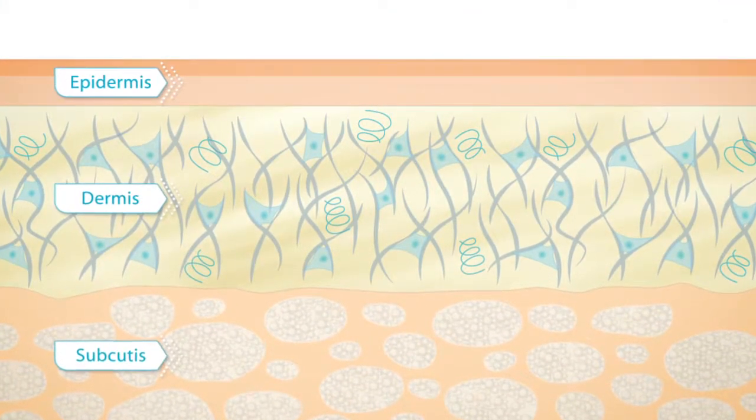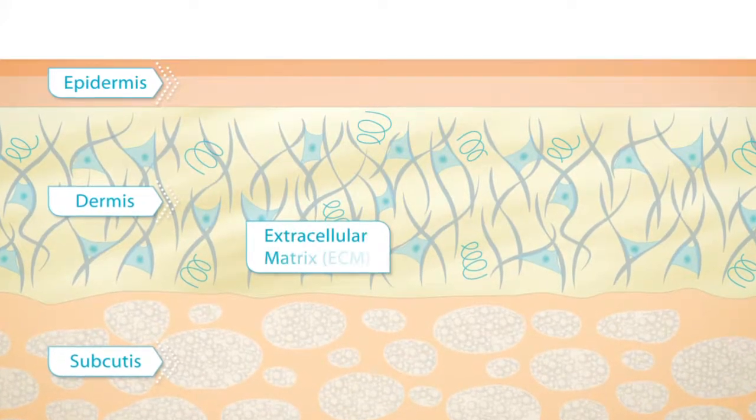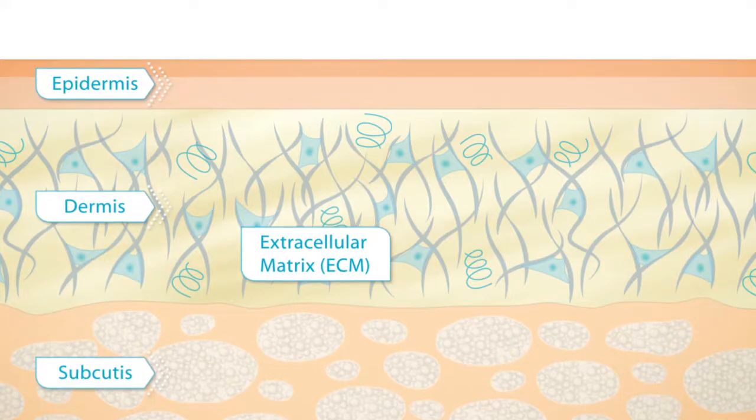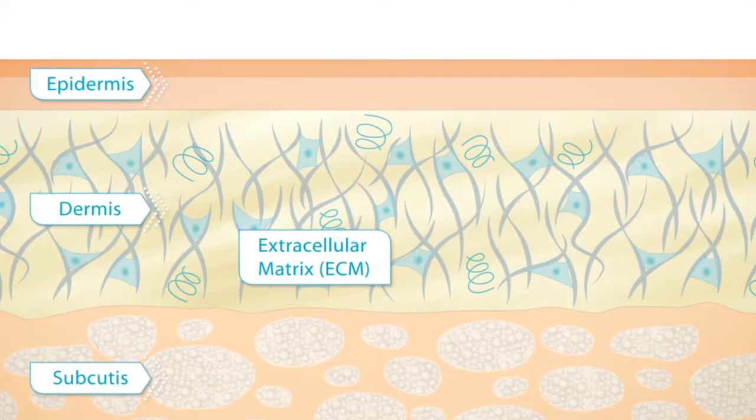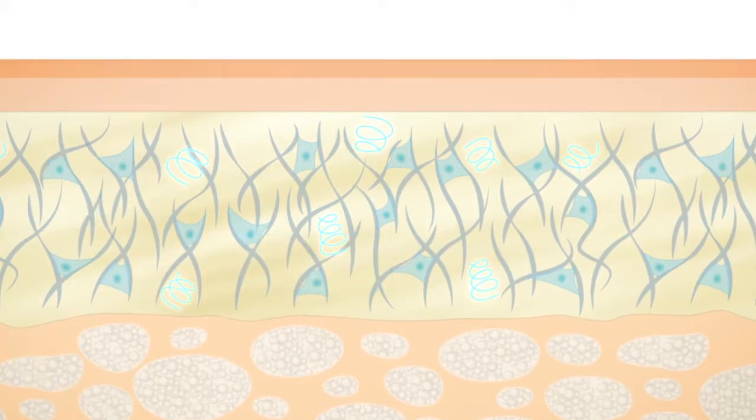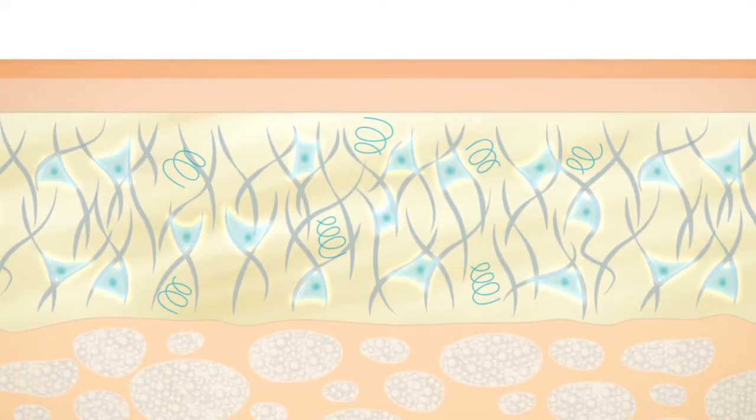The structure of the skin is supported by the extracellular matrix, or ECM for short, which gives the skin its unique elasticity and tensile strength. The ECM is a complex scaffold composed of proteins and fibers, mainly produced by fibroblasts.